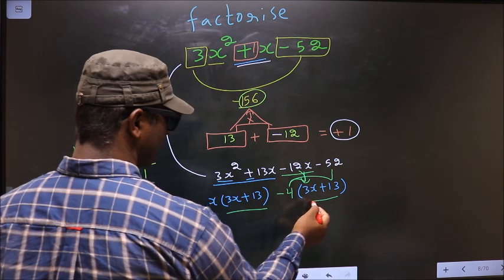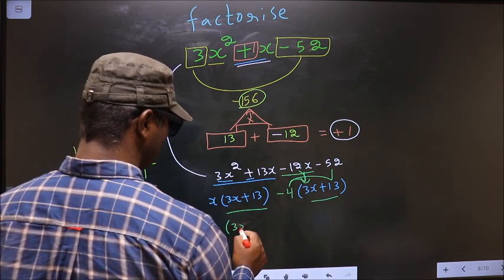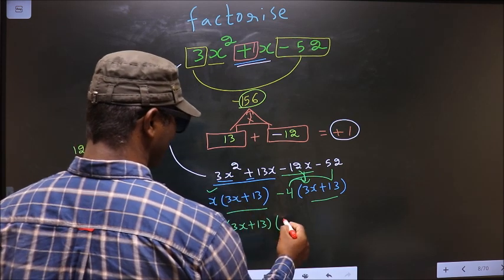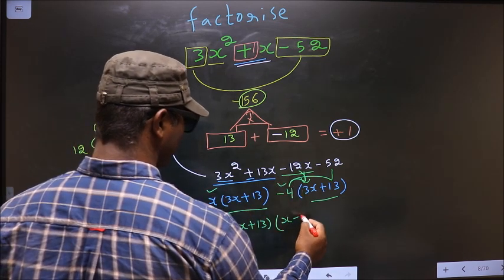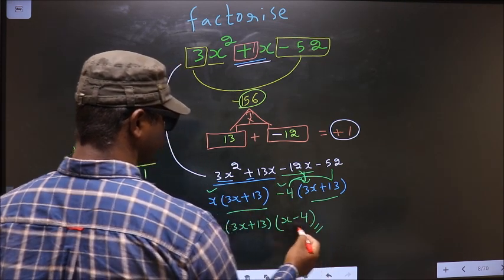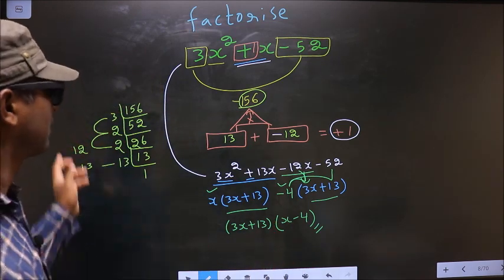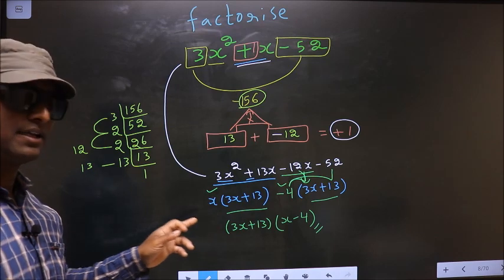Now you take out 3x + 13 common. So here you have x and here you have -4. This is our answer. Am I clear?